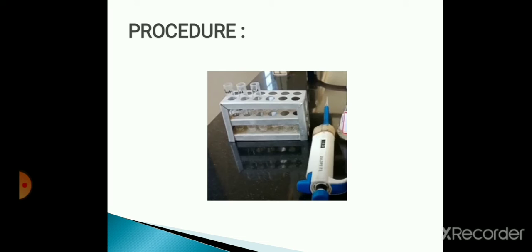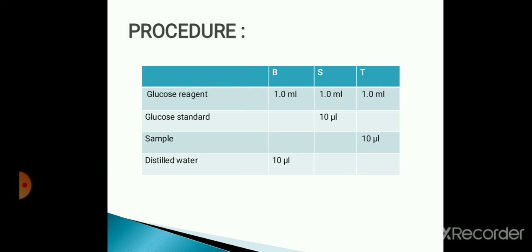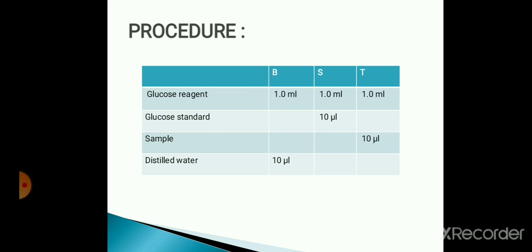Procedure. Take three test tubes and label them as blank, standard, and test. Add 1 ml of glucose reagent in blank, standard, and test.